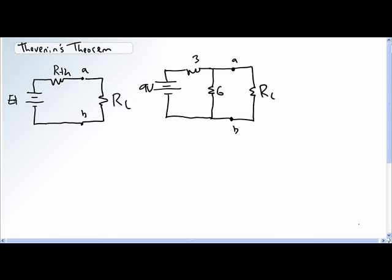So given this network here, where there's a 9-volt source with a 3-ohm and a 6-ohm resistor hooked up in this fashion to a load resistor, we should ideally be able to replace what's inside the box with its Thevenin equivalent.